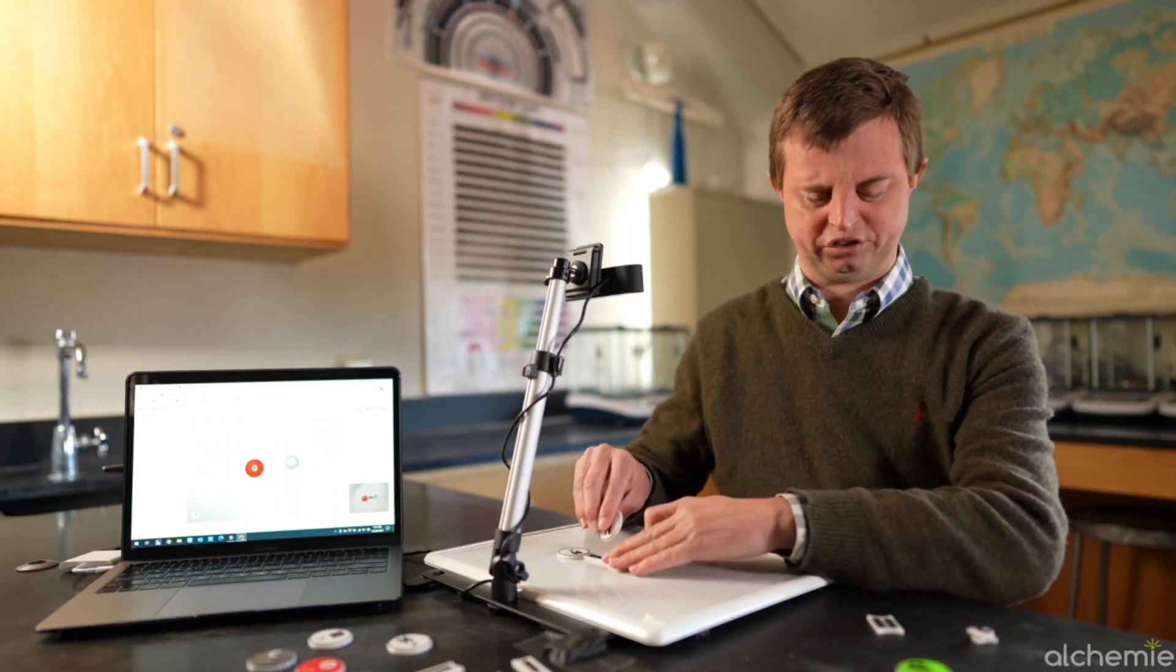Great, so we just used one of oxygen's six valence electrons up. We're going to bond another hydrogen to oxygen, because we know the formula is H2O. Added to board. Hydrogen. Hydrogen bonded to oxygen. The electron count is four.